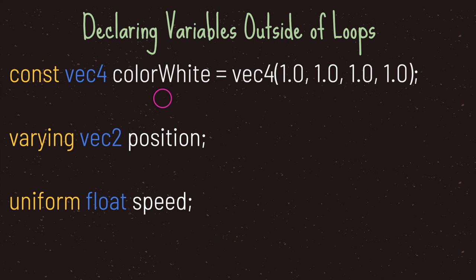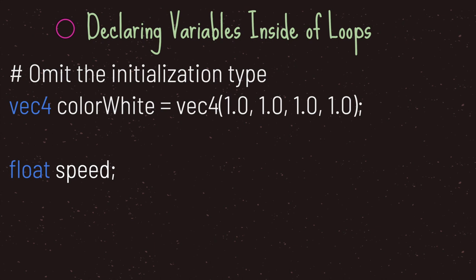For varying, it's: varying, data type, variable name. Same for uniform: uniform, data type, variable name. When declaring a variable inside one of your loops — either the vertex or fragment loop — you can omit the initialization type. So you just write the data type, like vec4, followed by the variable name color_white, and assign it values. Same thing for a float variable like speed.